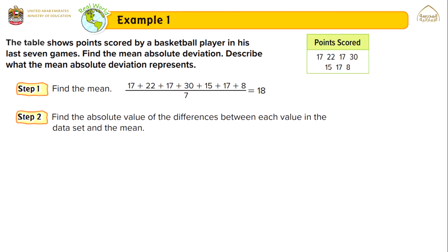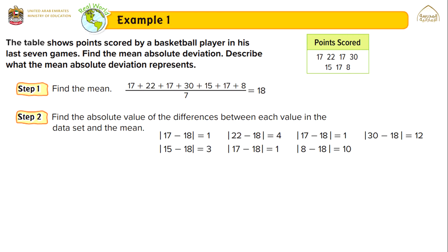Step 2: find the absolute value of the difference between each value in the data set and the mean. The absolute value of 17 minus 18 is 1; 22 minus 18 is 4; 17 minus 18 is 1; 30 minus 18 is 12; absolute value of 15 minus 18 is 3; absolute value of 8 minus 18 is 10.